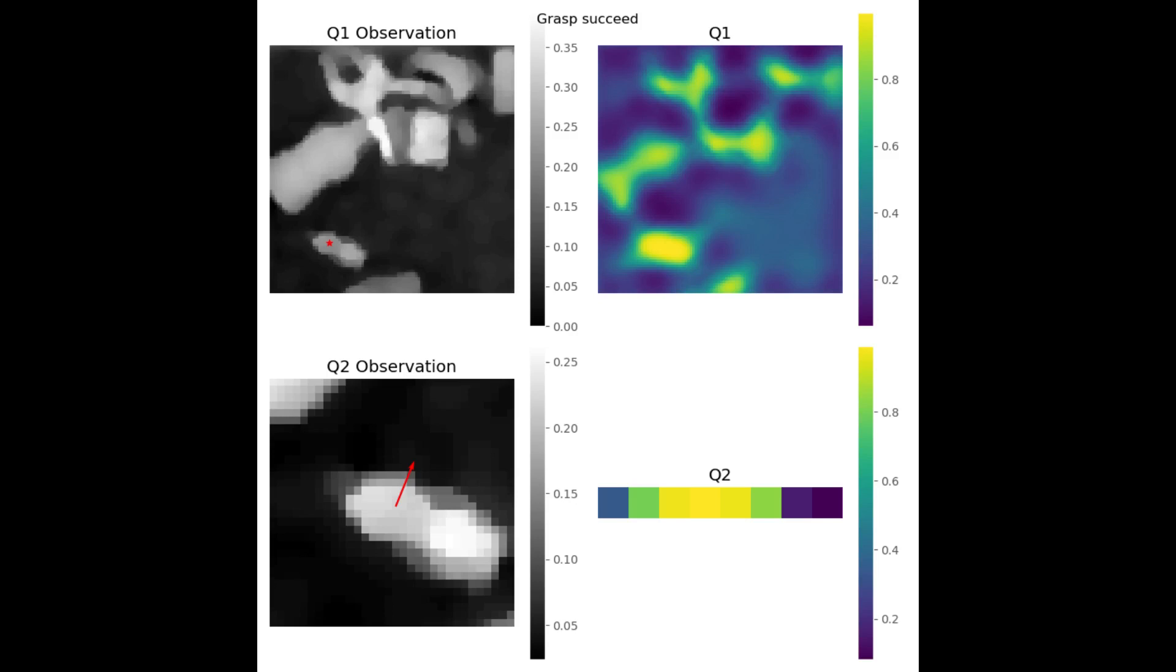The image is processed by a convolutional neural network to produce points of interest for grasping. An image patch around the best point of interest is processed by a second network, which outputs an orientation for the robot gripper.